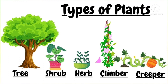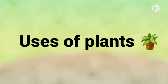So these are the different types of plants. Let's recall one more time — how many types of plants are there? There are basically five types of plants: trees, herbs, shrubs, climbers, and creepers. We can identify different plants by their flowers, leaves, fruits, and trunks, as every plant has different leaves.